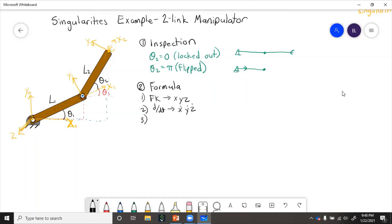Step three is put in a matrix form, find the Jacobian. And then step four, set J equal to zero and solve.